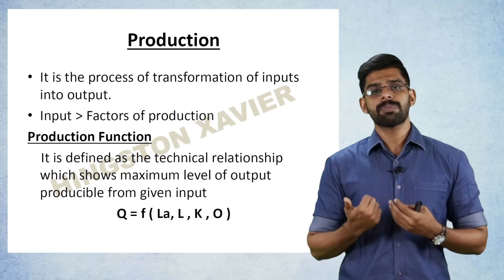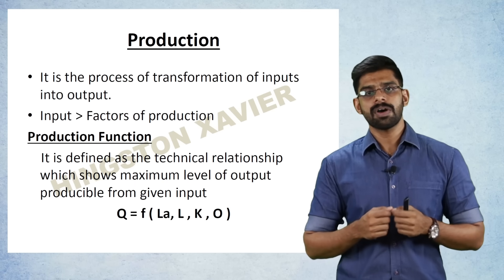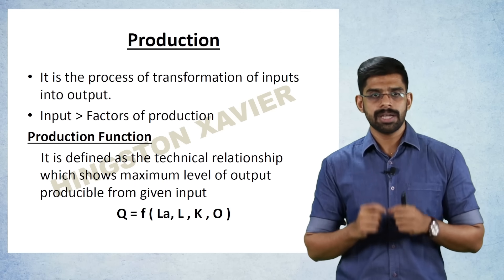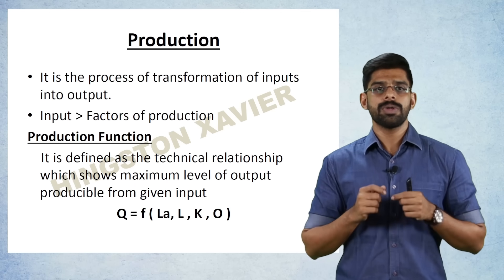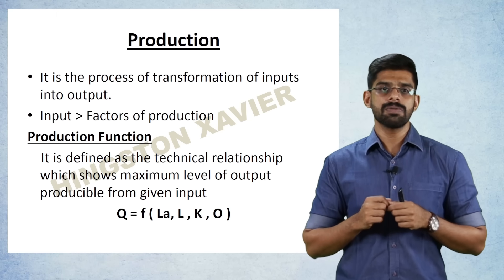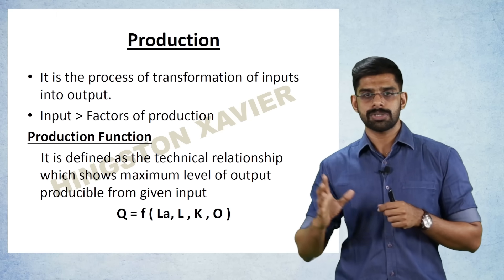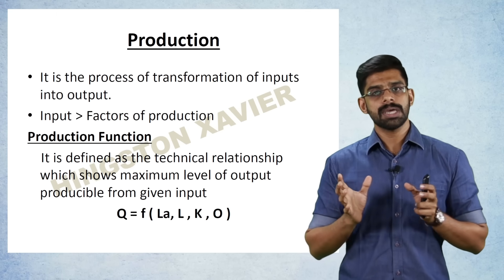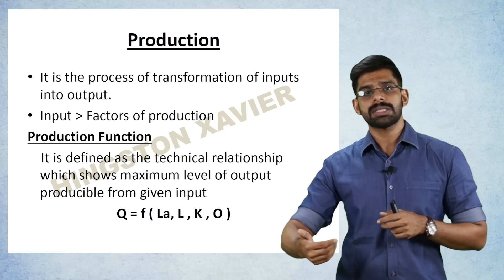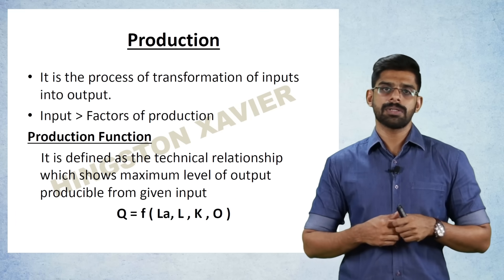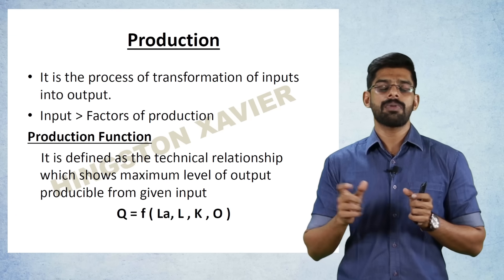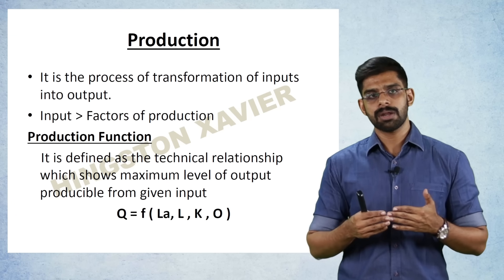Now, what is a production function? Production function is defined as a technical relationship which shows the maximum level of output producible from a given input. Given a certain amount of inputs, how much output we can get — that is a technical relationship between input and output.